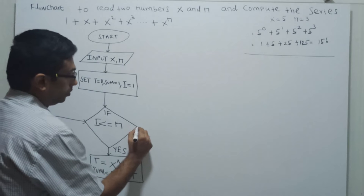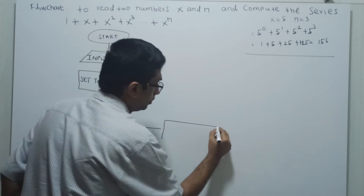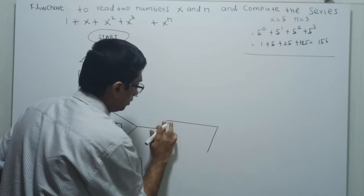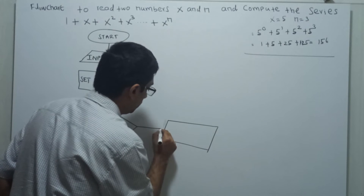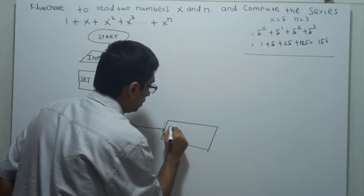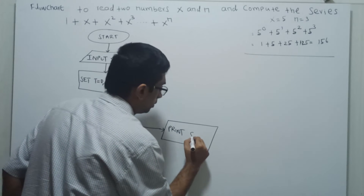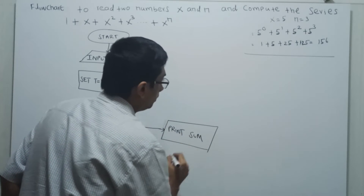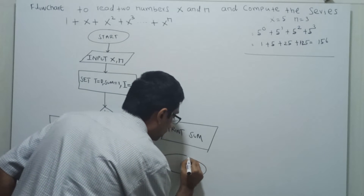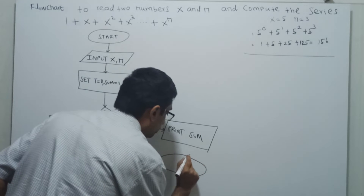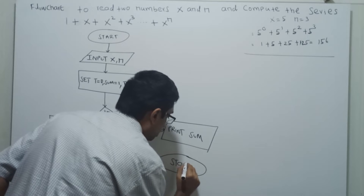When the condition is no, I am printing the value of sum and ending the flowchart.